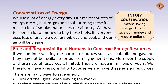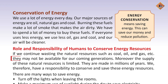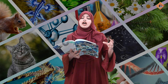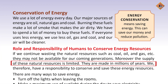Children, now we need to look at what our roles and responsibilities are to conserve energy resources. If we continue wasting natural resources like oil, coal, and gas, then in the coming time, all these resources will be finished for our coming generations. If we keep using something continuously, it will run out.